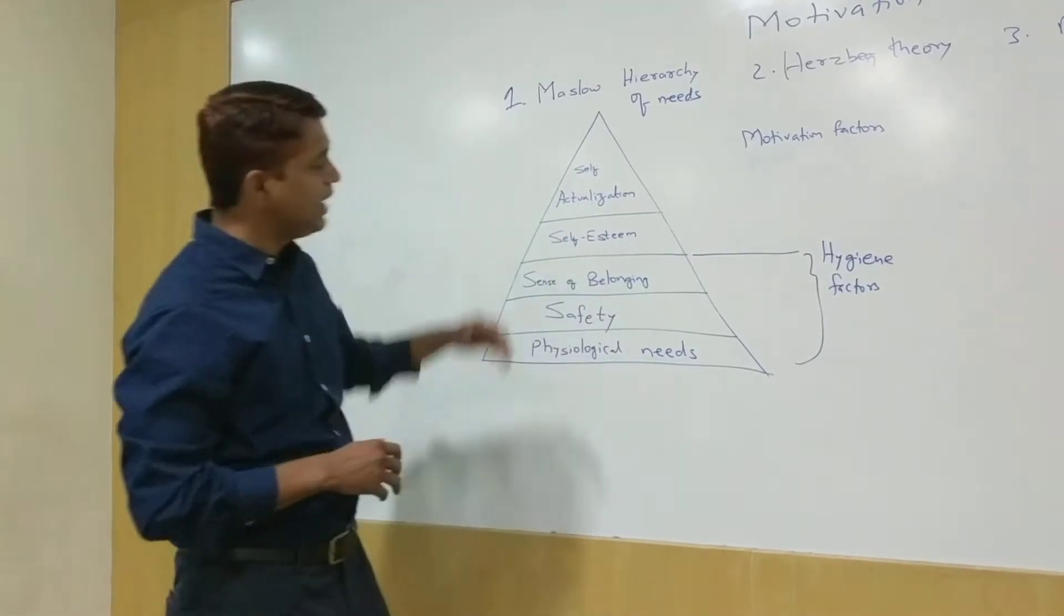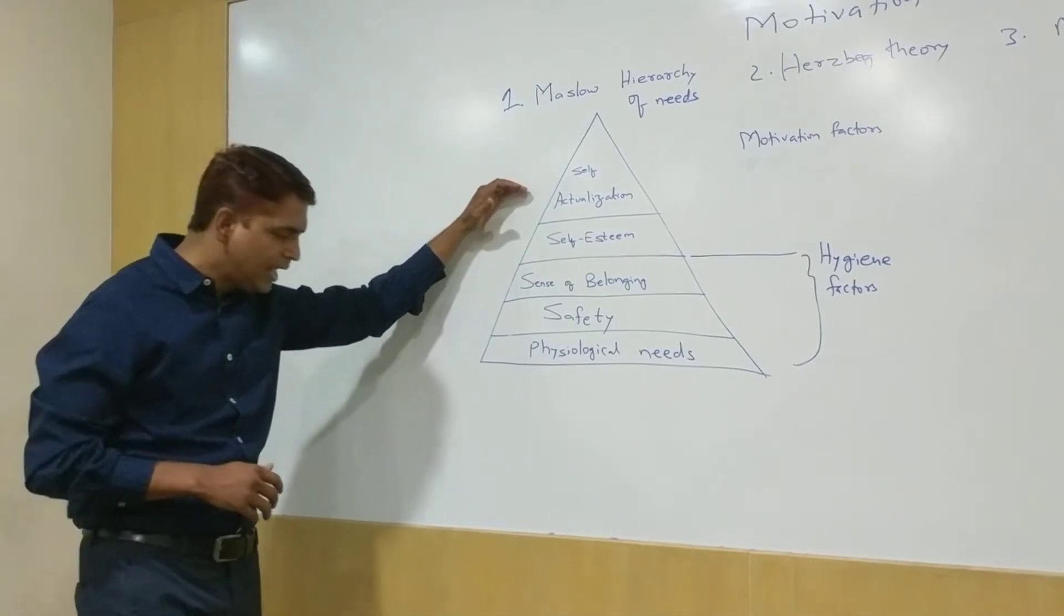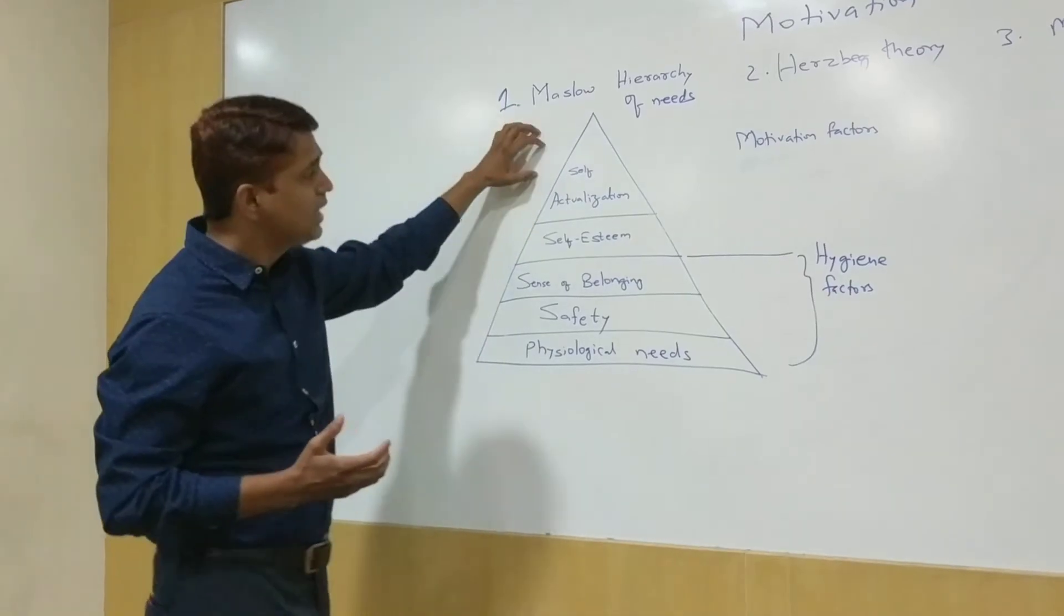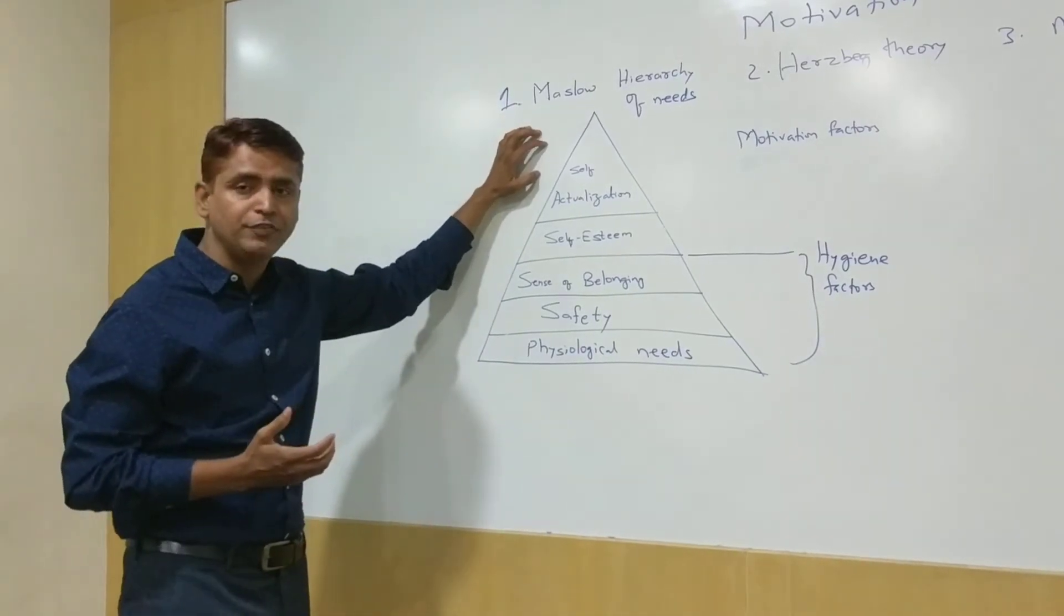And the last one is self-actualization. That basically means you realize your true potential. So that's Maslow's hierarchy of needs.